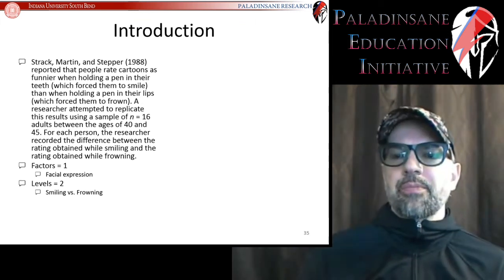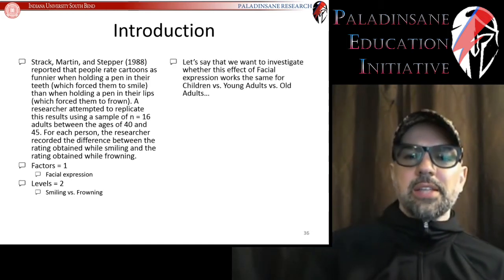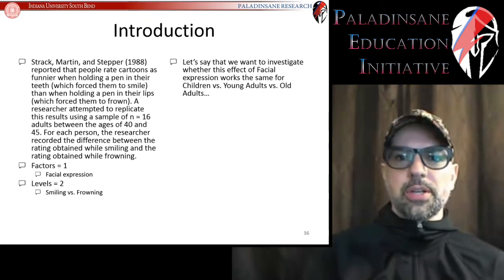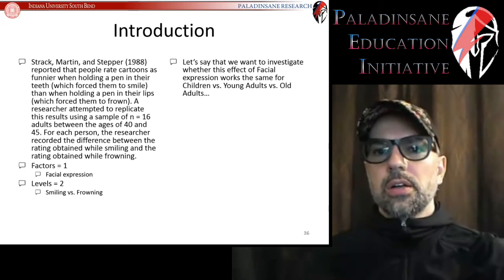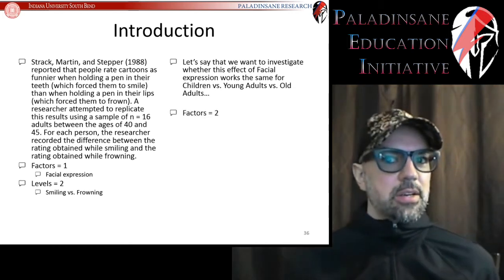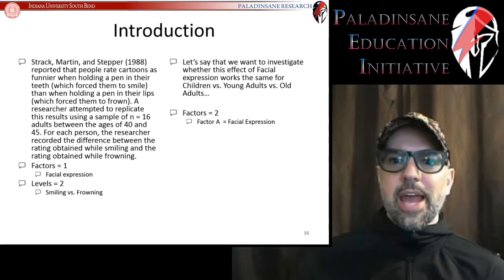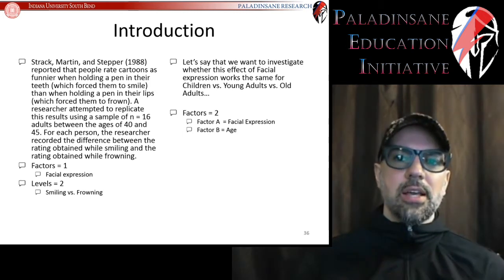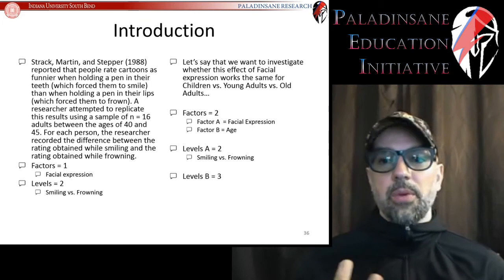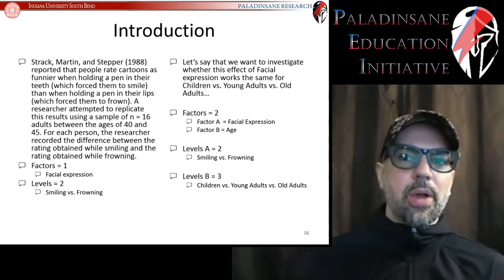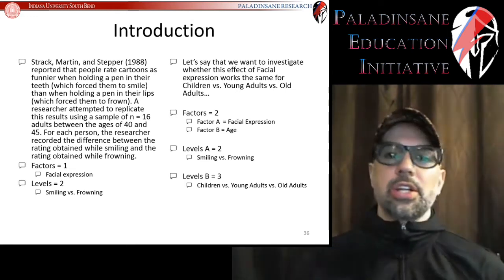However, suppose we wondered if this effect is moderated by age — testing children versus young adults versus old adults. Now we've added a second factor: age. Factor A is facial expression with two levels; Factor B is age with three levels. In this situation, a t-test is not appropriate. We turn to ANOVAs, which handle situations with more than one factor and/or more than two levels.